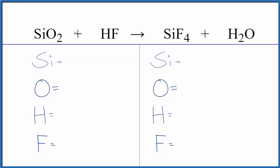So let's start out by counting the atoms up and then we'll balance the equation. We have one Si, two oxygens, one hydrogen, one fluorine.